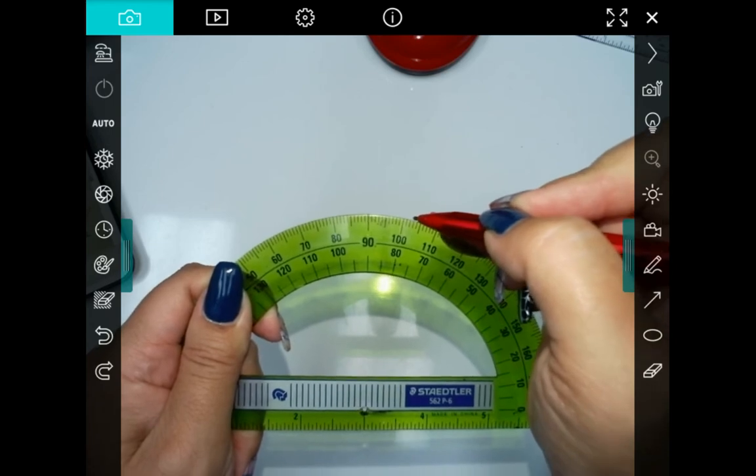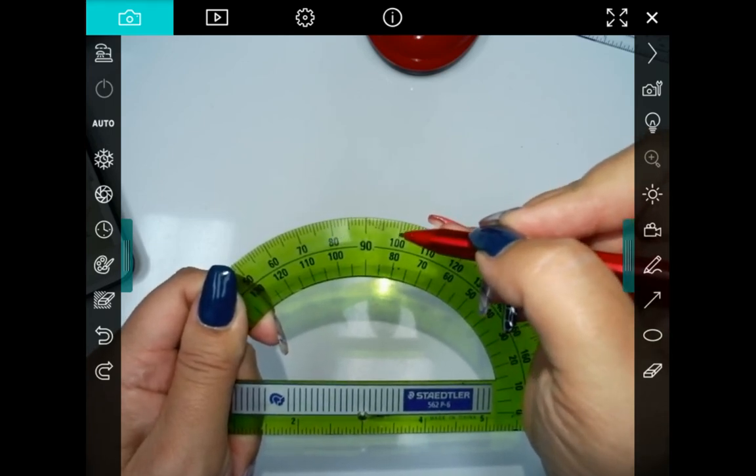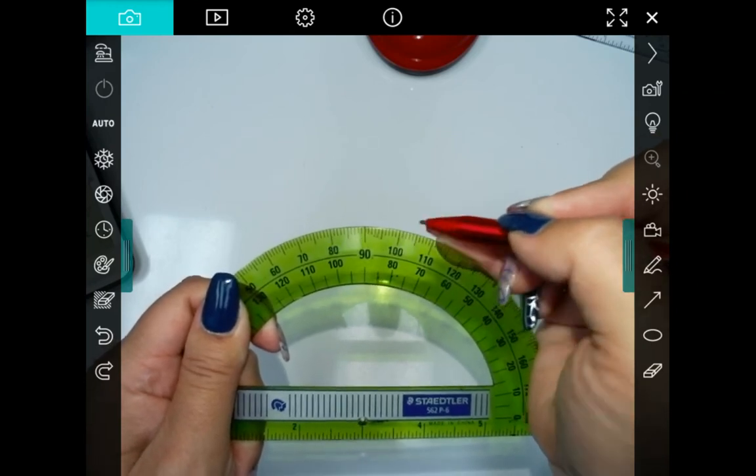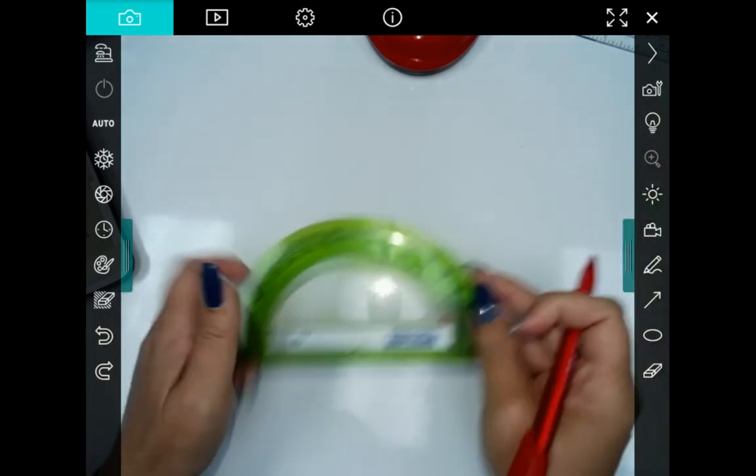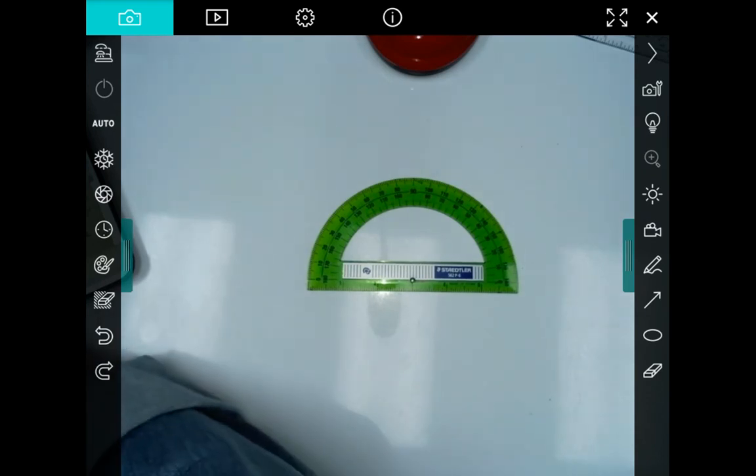So each one of these little tiny lines is one degree. So if I have an angle that lands right here, I'm going to say this is 100, 101, 102, 103. And that's how you read your protractor. So that is all the information that you need to know about your protractor. In the next video, we will start using our protractor to measure.